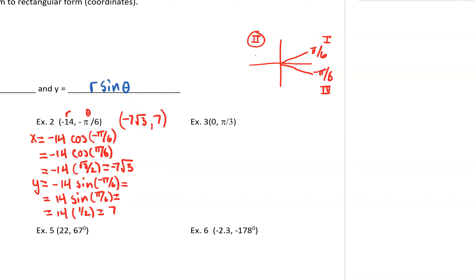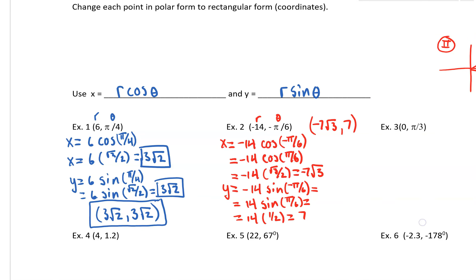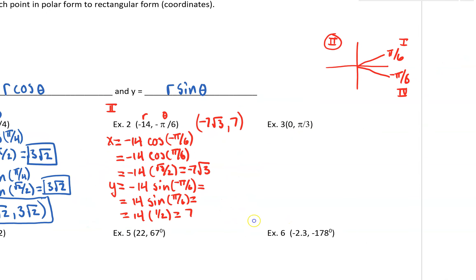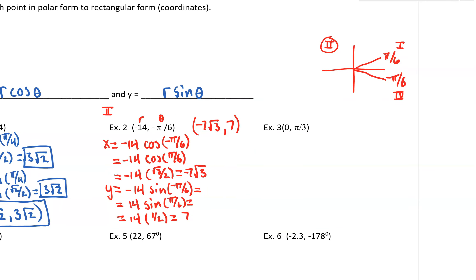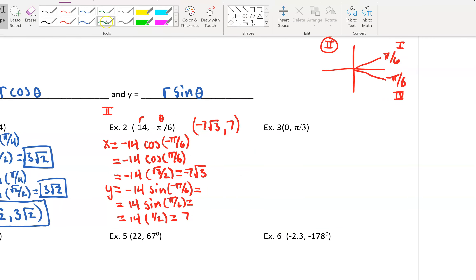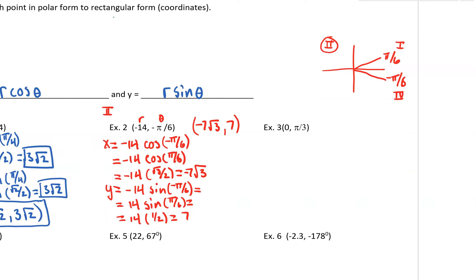That is something you want to think about as you do these. The first example was in the first quadrant, and the answer was in the first quadrant because both values are positive. The second example ended up in the second quadrant — checking which quadrant you're in is important so you know where your answer is going to lie.